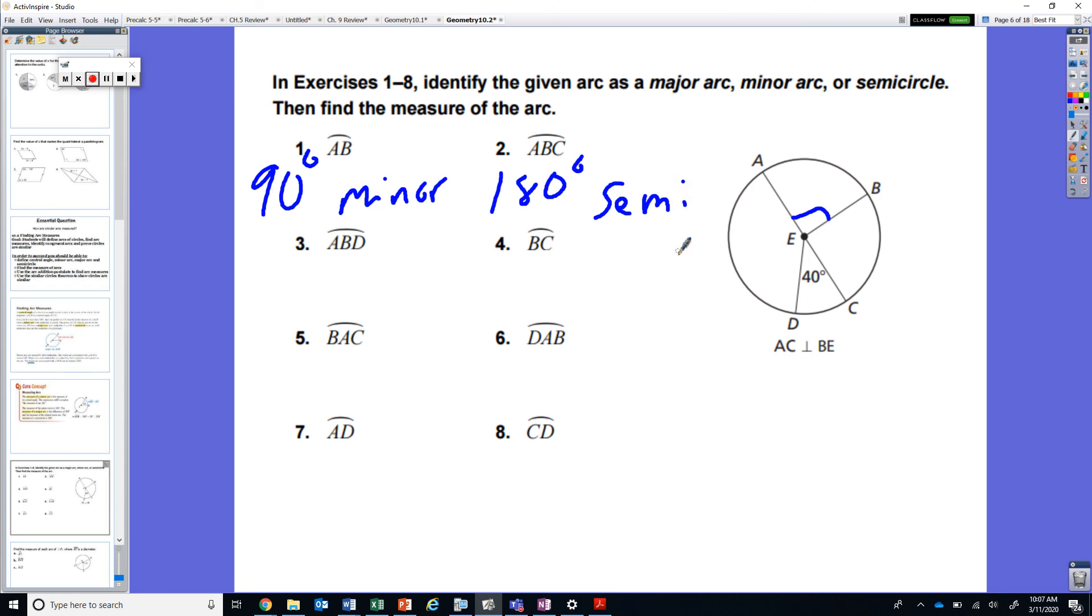Let's continue. Arc ABD. Well think about what we have here. We have ABC being a semicircle plus another 40 degrees that we have. So we have 180 plus 40 for 220 degrees as a major arc.